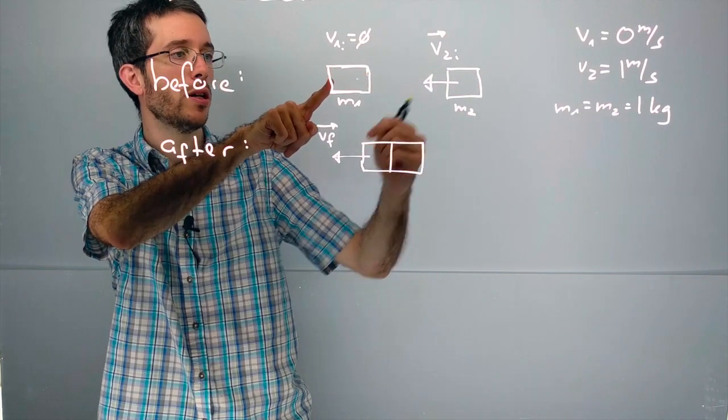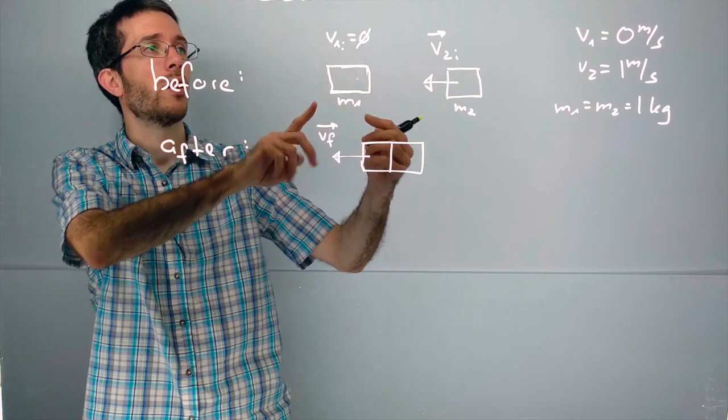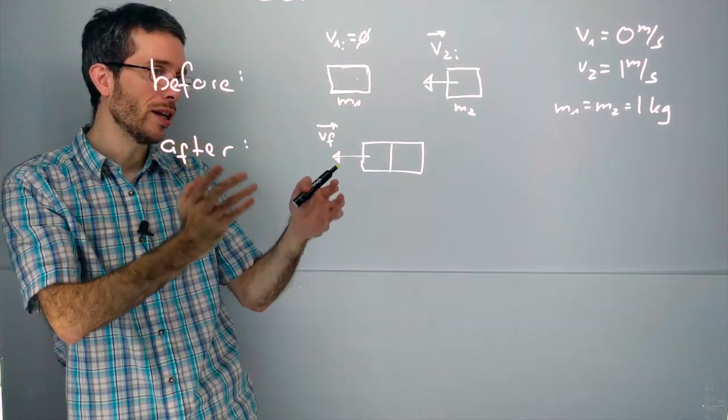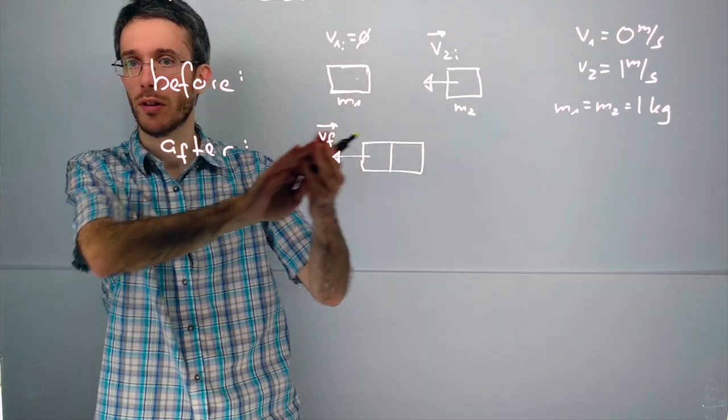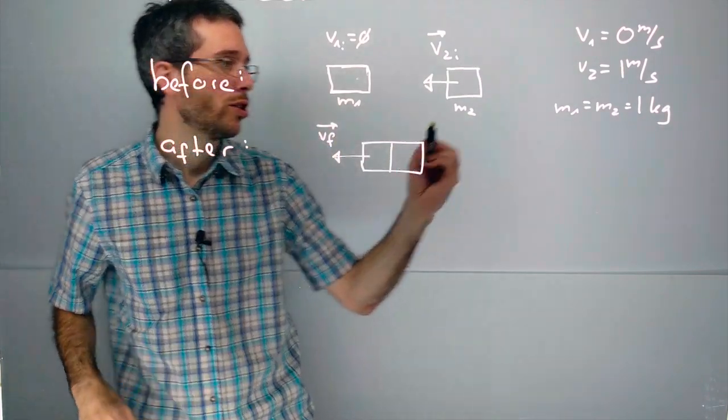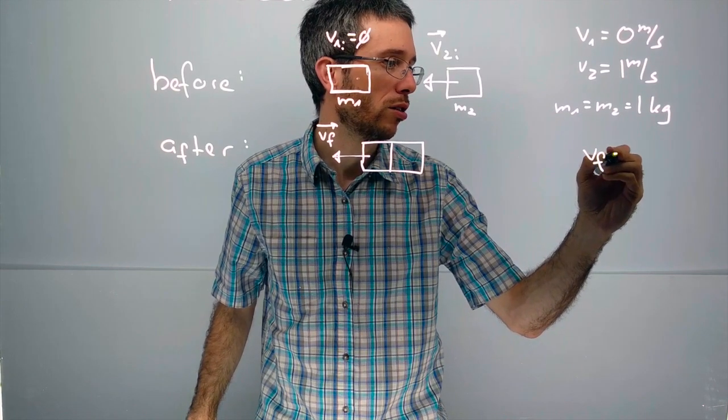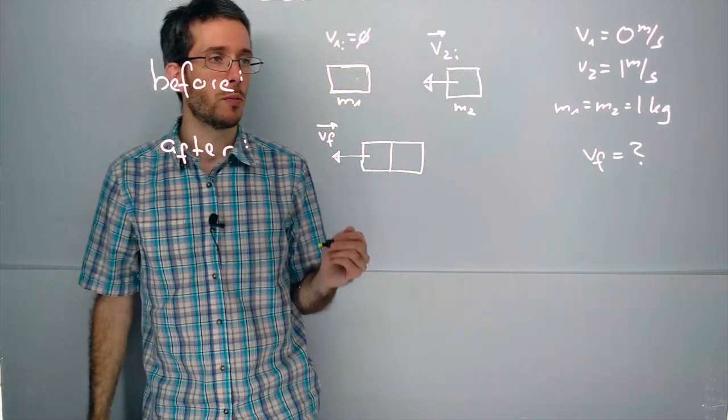at a speed of 1 m per second. Those two objects are colliding and if the collision is 100% inelastic then at the end they will travel together. So the question is: what is the final common speed of those objects?